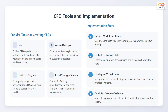Now let's see the implementation steps. First, define workflow states clearly — each stage in your process that work items flow through. Gather data on when items entered and exited each workflow state. Set up your chosen tool to display the cumulative count of items by state over time. Schedule regular reviews of your CFD to identify trends and take action.